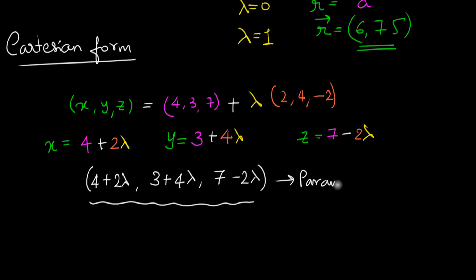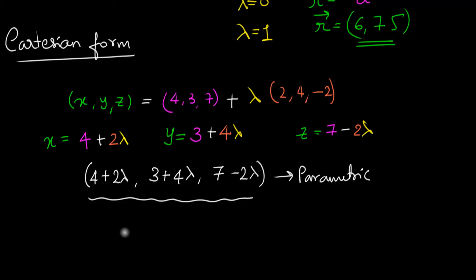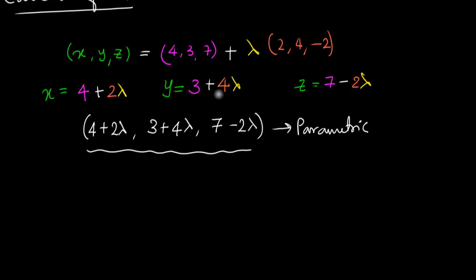Okay? So that's one way to write down the equation. But I'm going to write the more general way now, using x, y, z. And the trick is to calculate lambda. So from the first equation, lambda is just x minus 4 divided by 2. From the second equation,